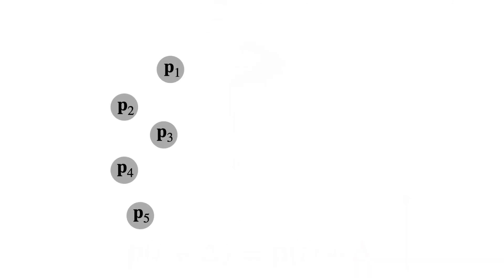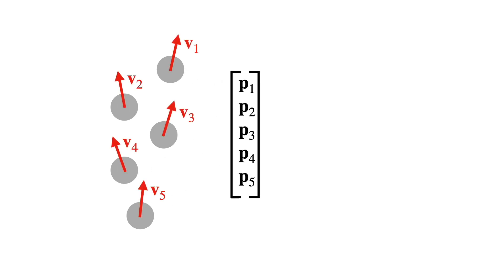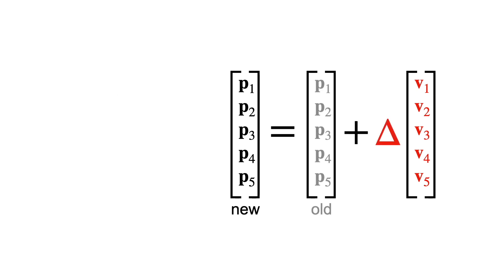This is all really easy to implement. Let's put all the particle positions into a vector and all the velocities into another vector. Now we can do the Euler update just by adding vectors together. In other words, you can update all the particles together in one easy step. This is called a particle system.